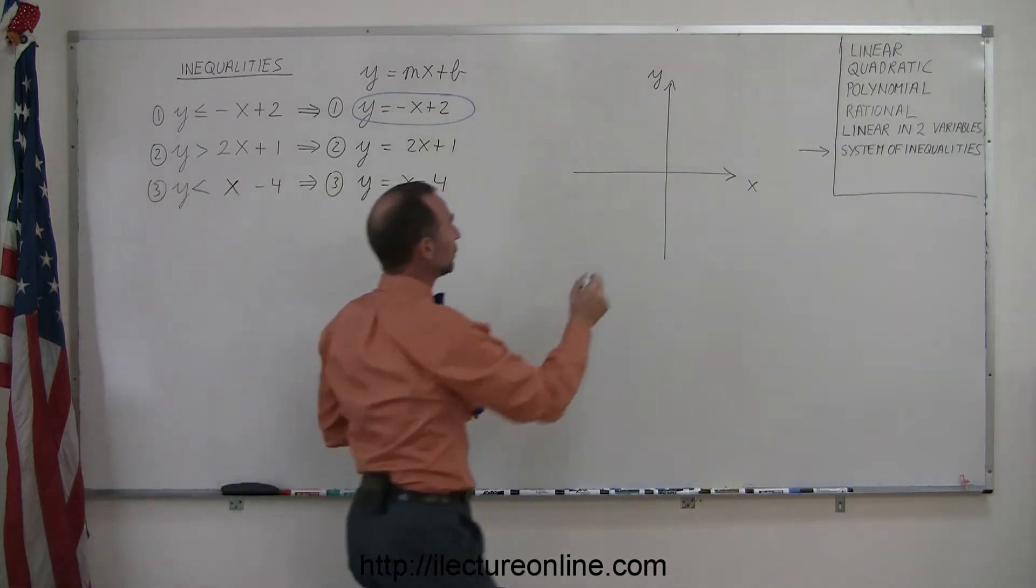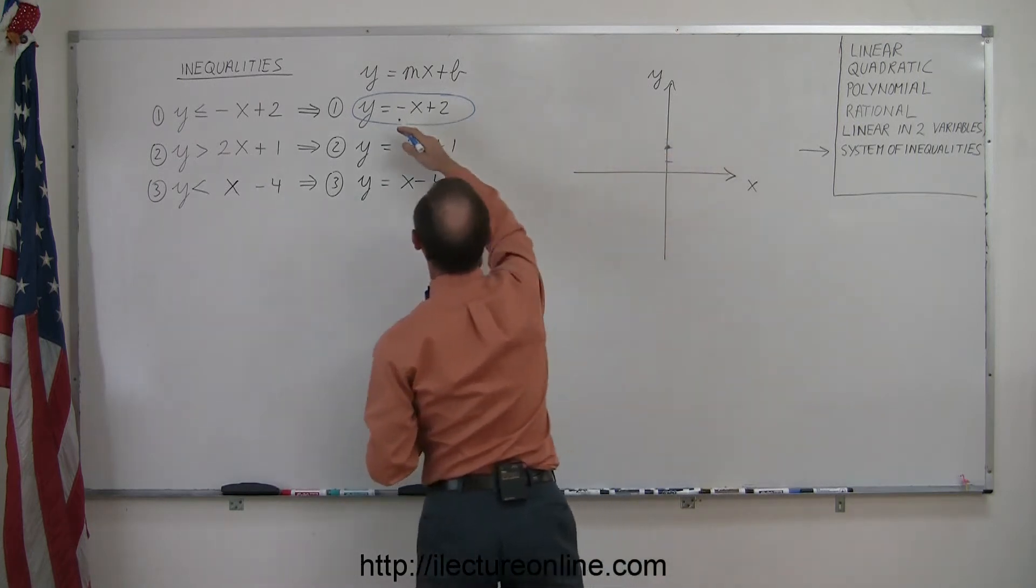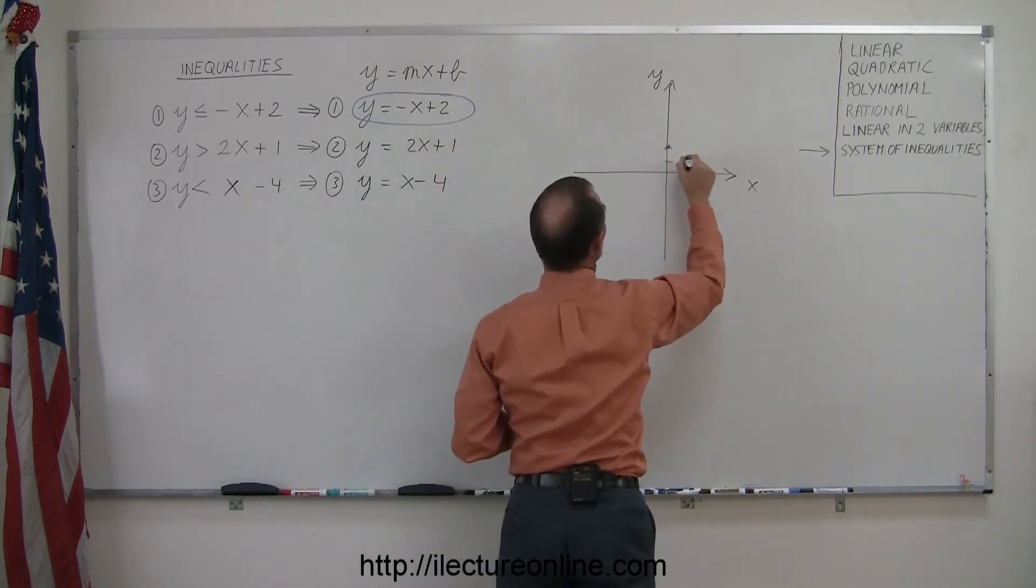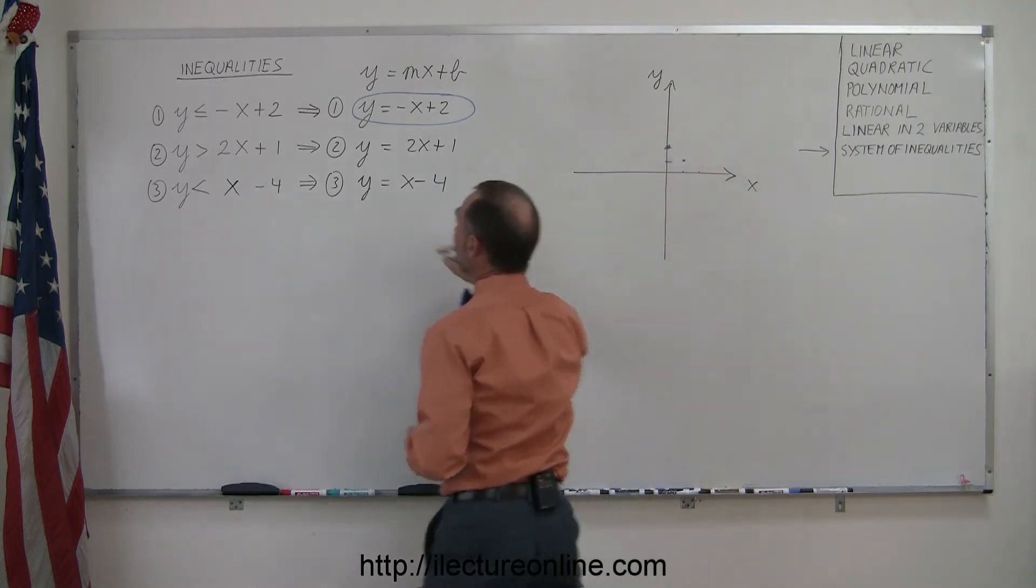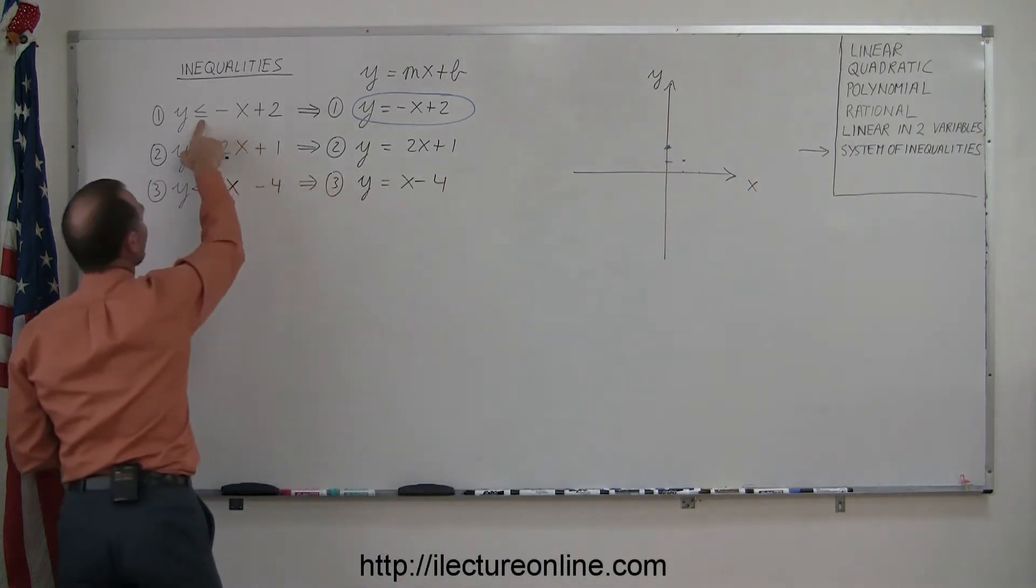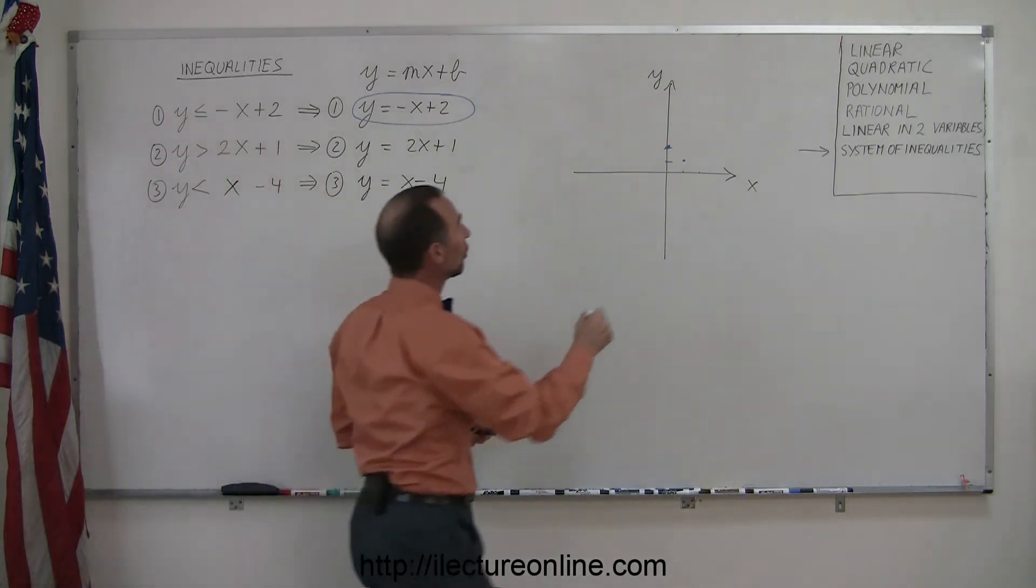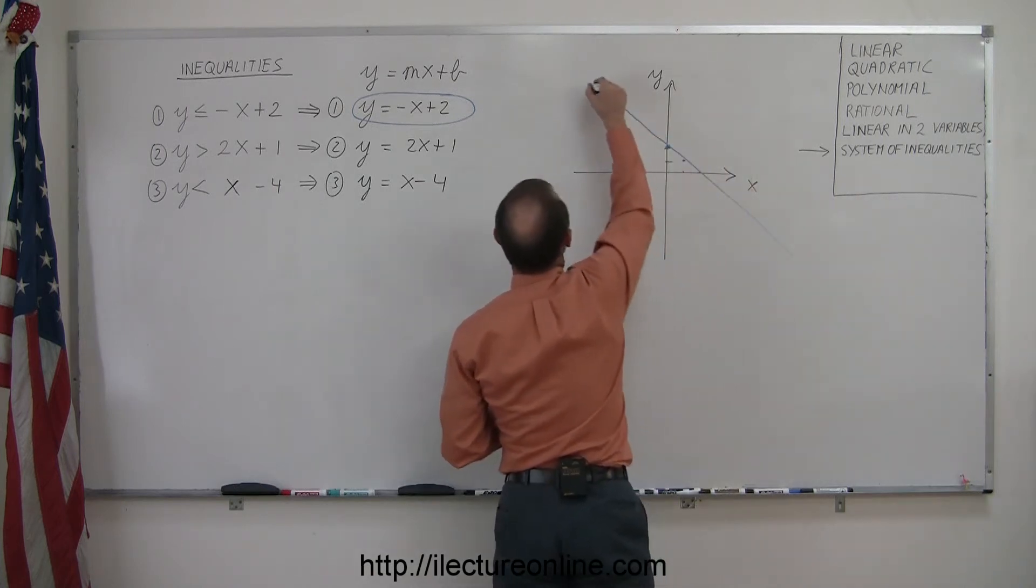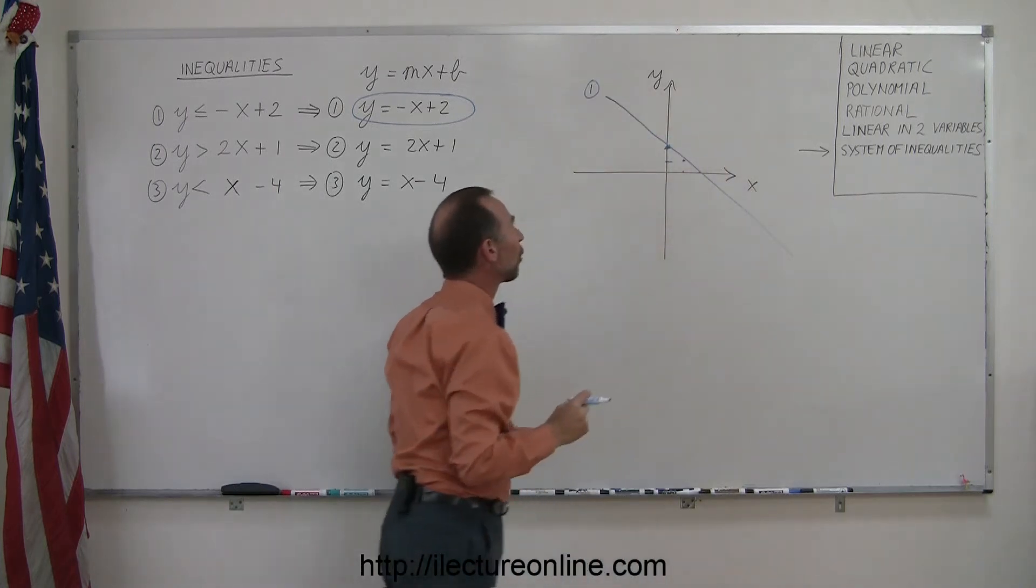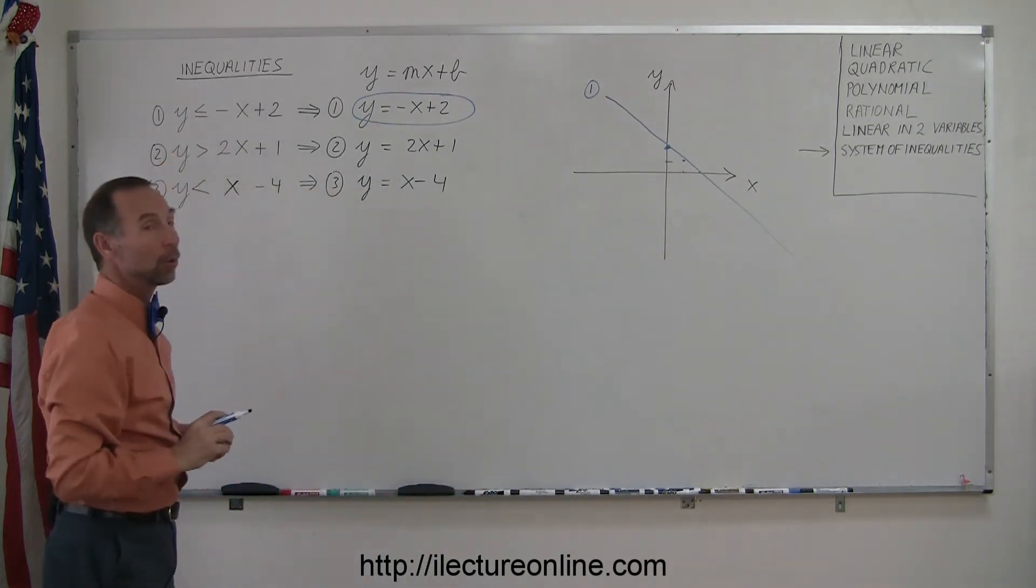So the intercept is plus 2, 1, 2, right there, and the slope is a minus 1. That means you drop 1, run 1, drop 1, run 1, and so forth, kind of a 45-degree angle. Notice that there's an equal sign there, as well as a less-than sign. That means the boundary is part of the solution, so we draw a solid line. So this is the boundary for the region that satisfies the first inequality.